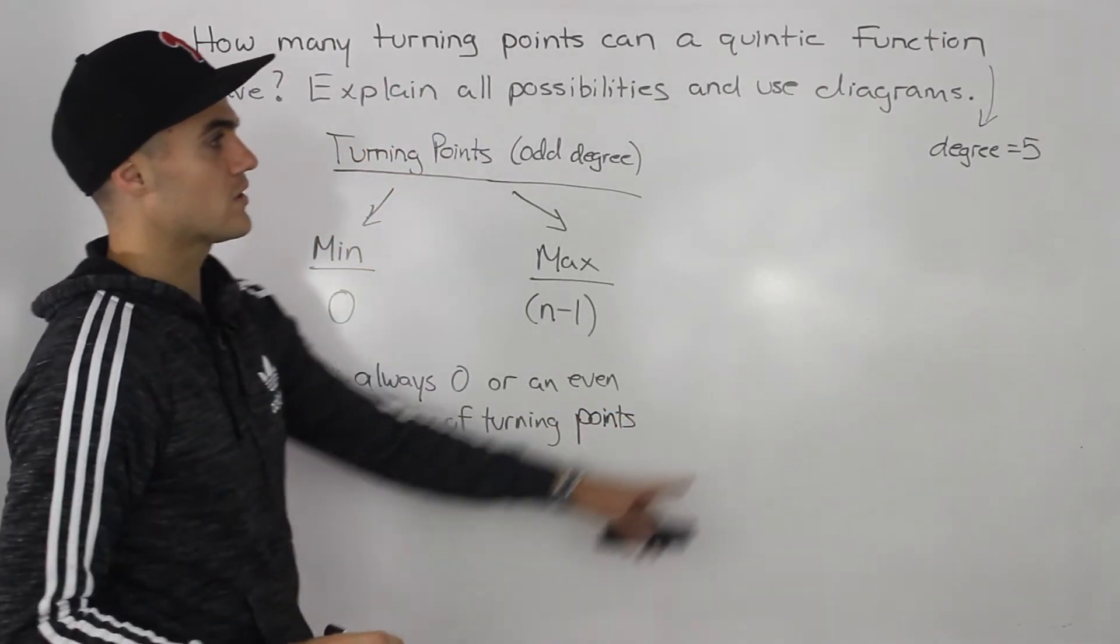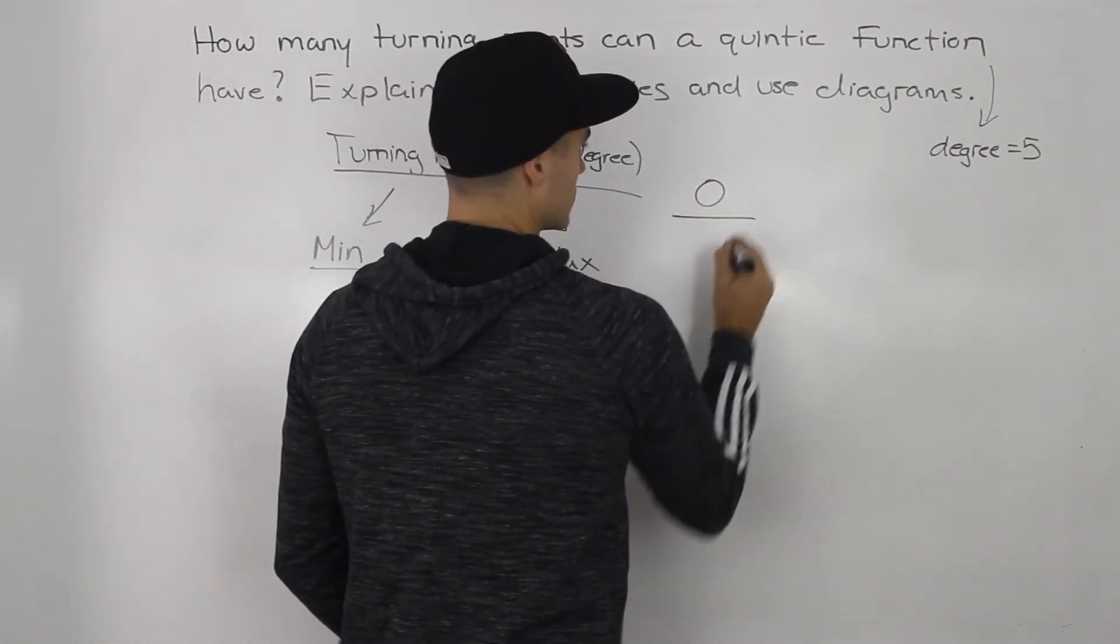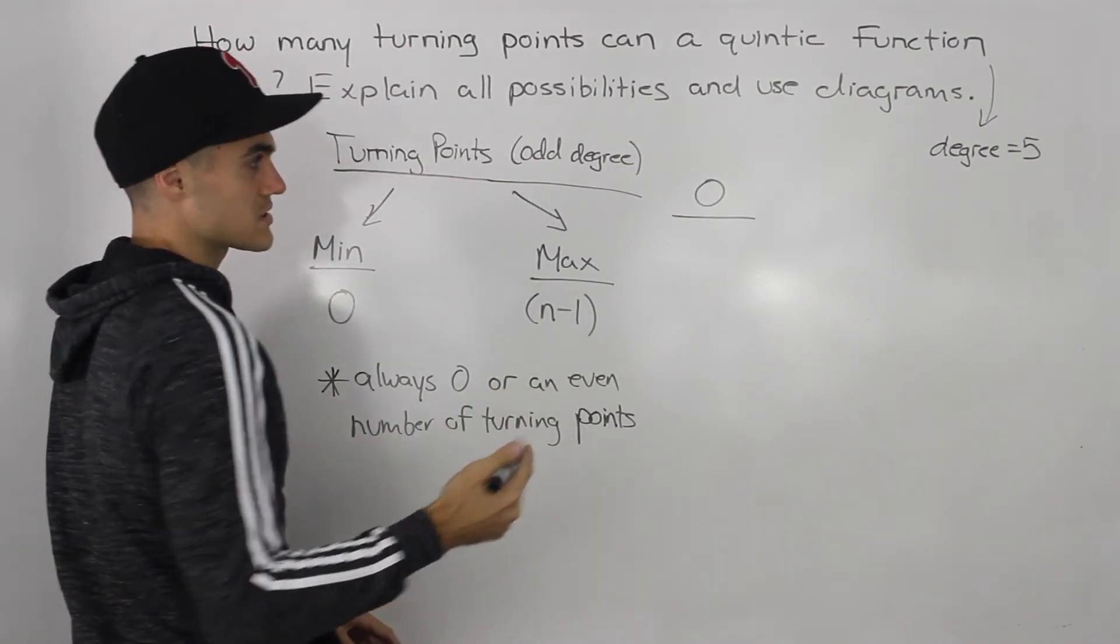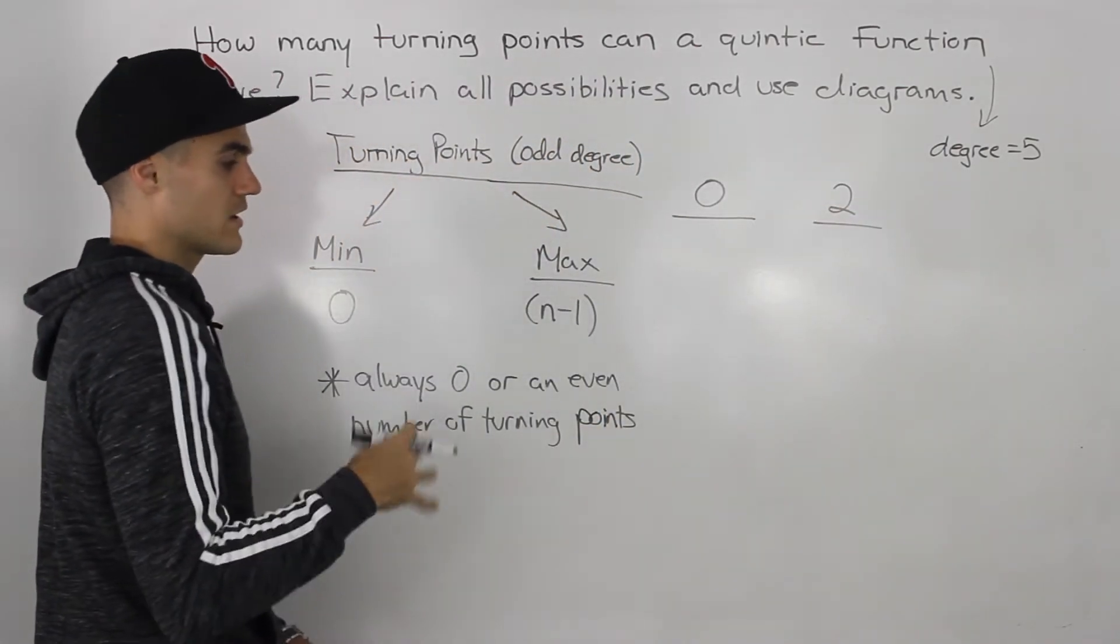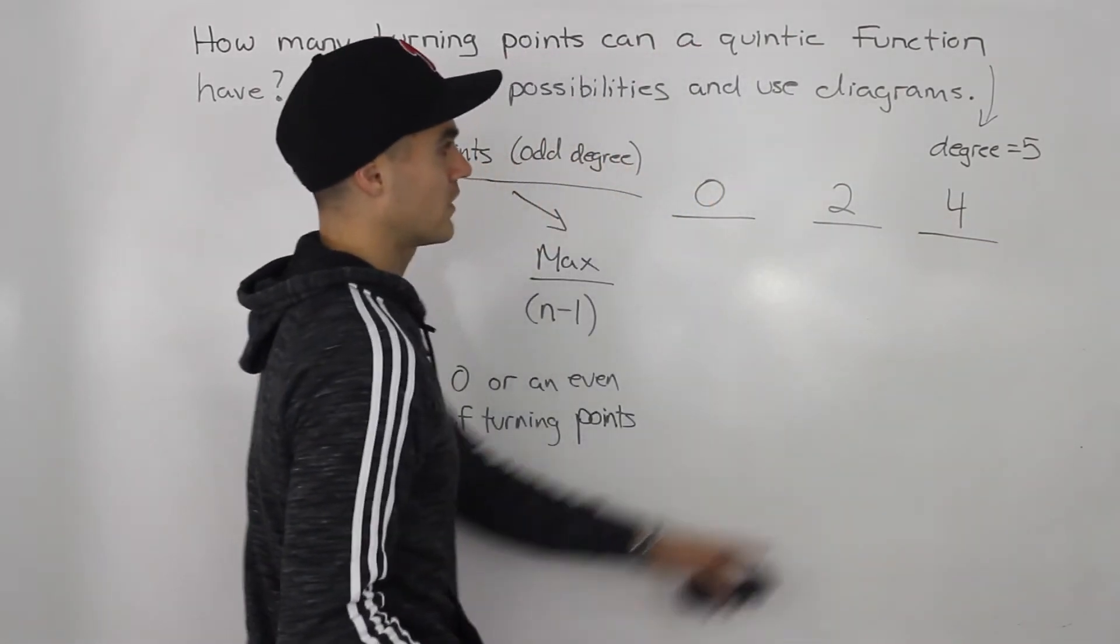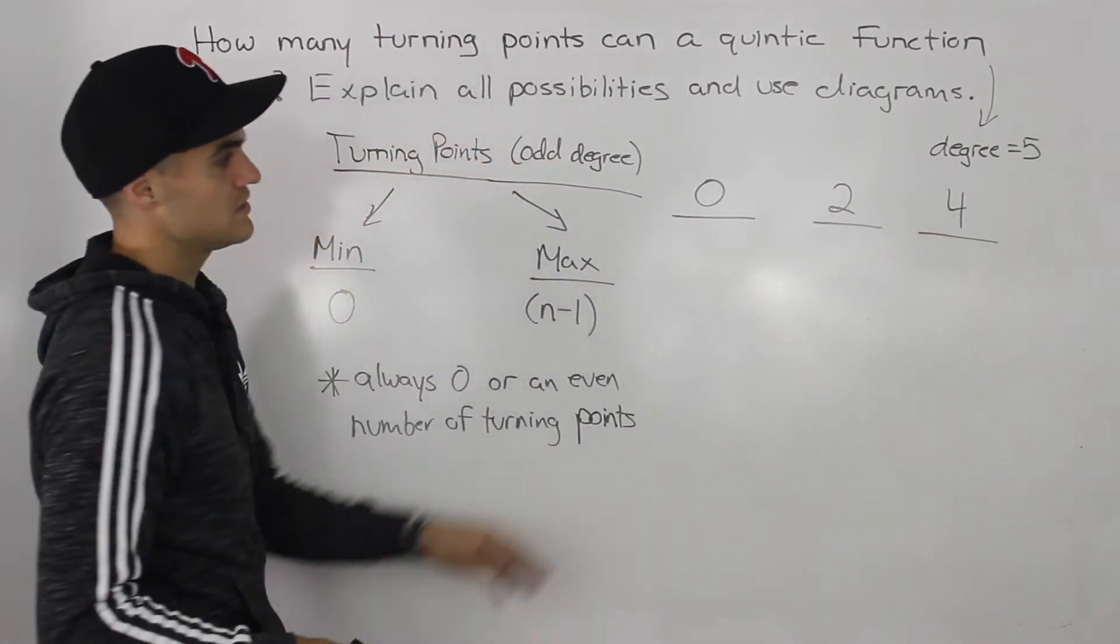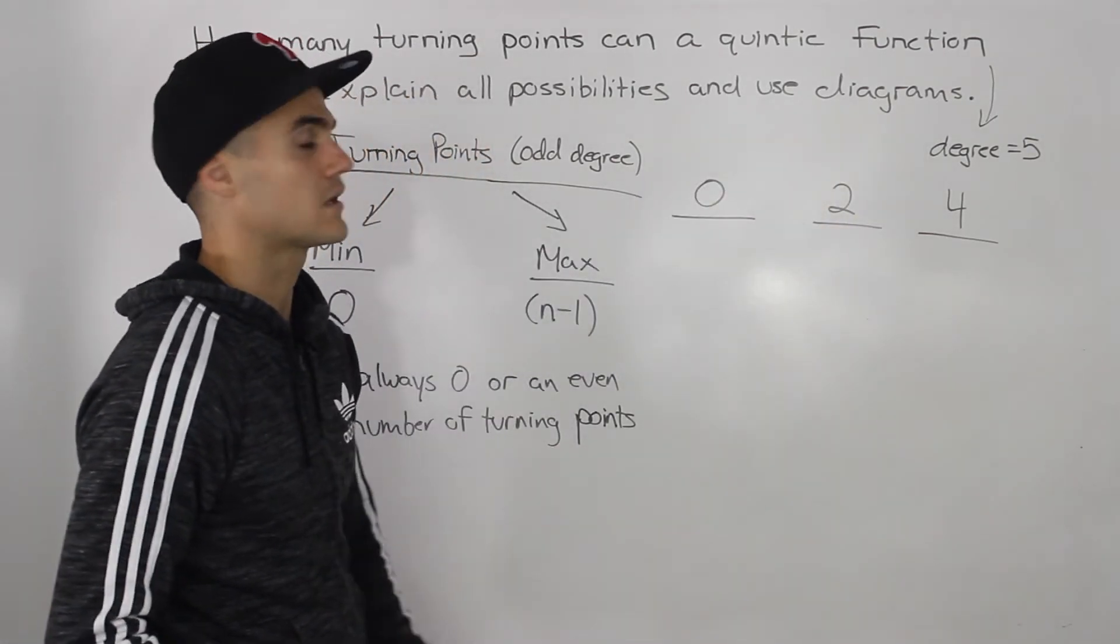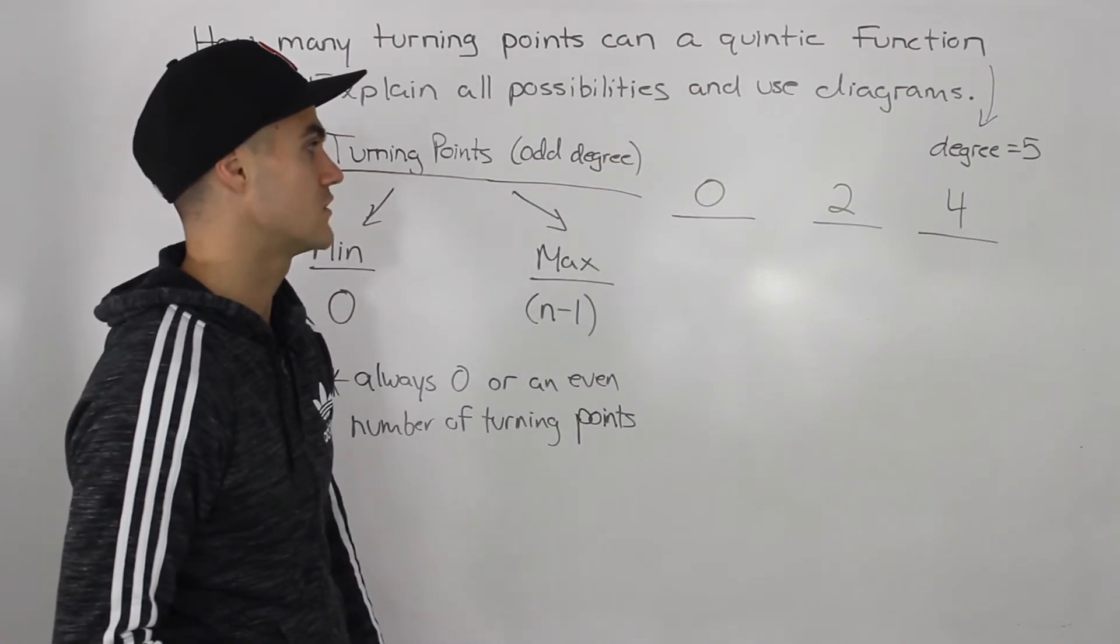So with a degree of five, what are the possibilities? It can have zero turning points or an even number. One turning point is impossible, but it can have two turning points. Three turning points is impossible, but it can have four turning points. Four is the maximum because it represents degree minus one. These are the three possibilities for a quintic function in terms of turning points.